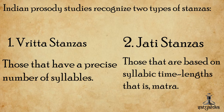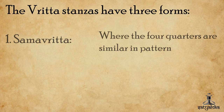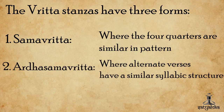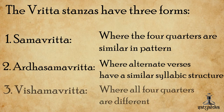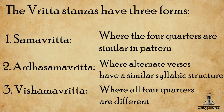The Vrutta stanzas have three forms: Samavrutta, where the four quarters are similar in pattern; Ardhasamavrutta, where alternate verses have similar syllabic structures; and Vishamavrutta, where all four quarters are different. The meters found in classical Sanskrit poetry are sometimes alternately classified into three kinds.